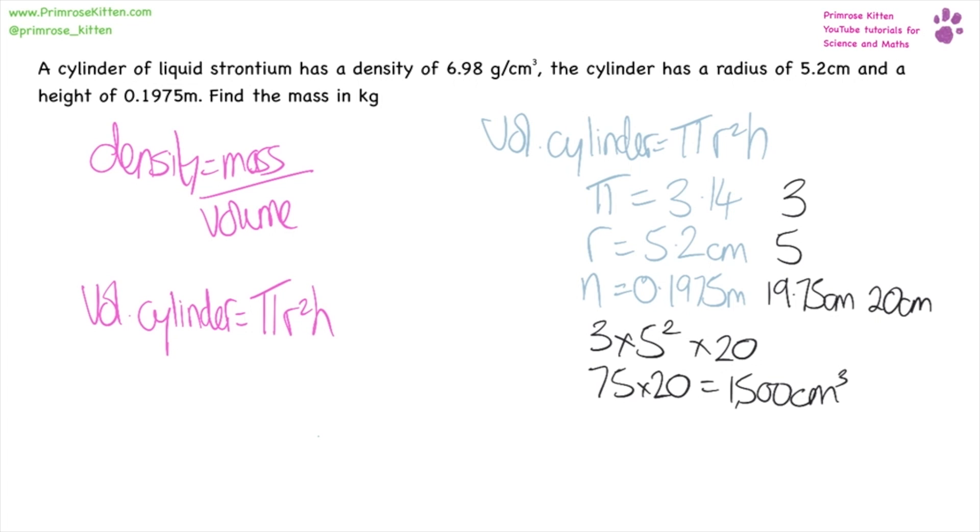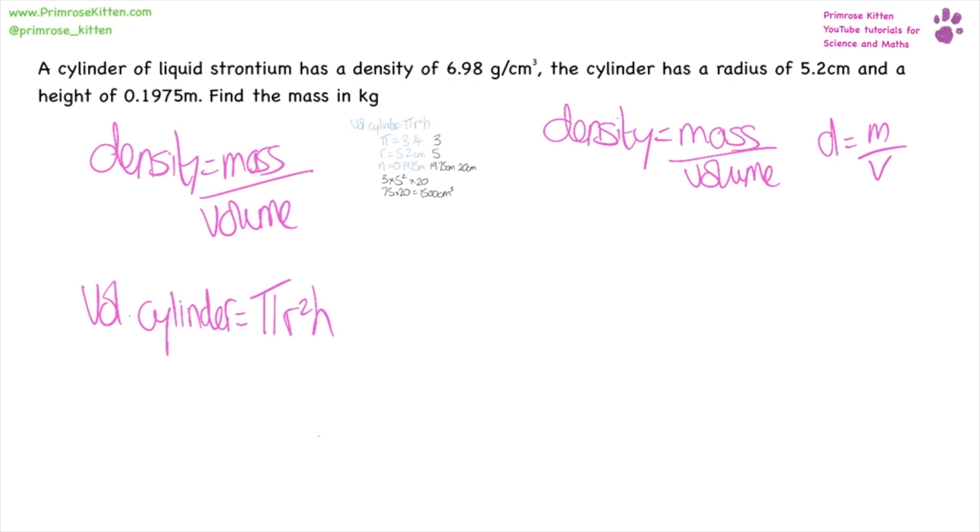Now we know what our volume is, we can work out what the density is. We know that density is mass over volume. We want to find mass, so we can say that density times volume equals mass.